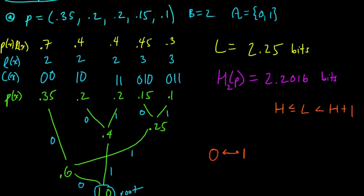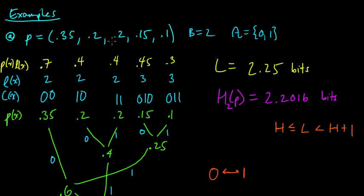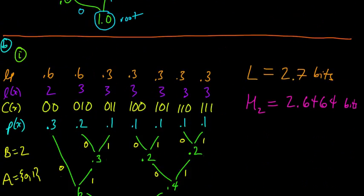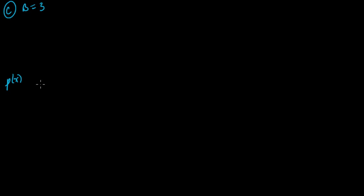Let's take this first example we looked at, with probabilities 0.35, 0.2, 0.2, 0.15, and 0.1, where we generated an optimal binary symbol code. We'll take this same PMF over these five symbols and instead of generating a binary symbol code, let's do a ternary symbol code — b equals three. So this will be our third example, and our p is 0.35, 0.2, 0.2, 0.15, and 0.1.